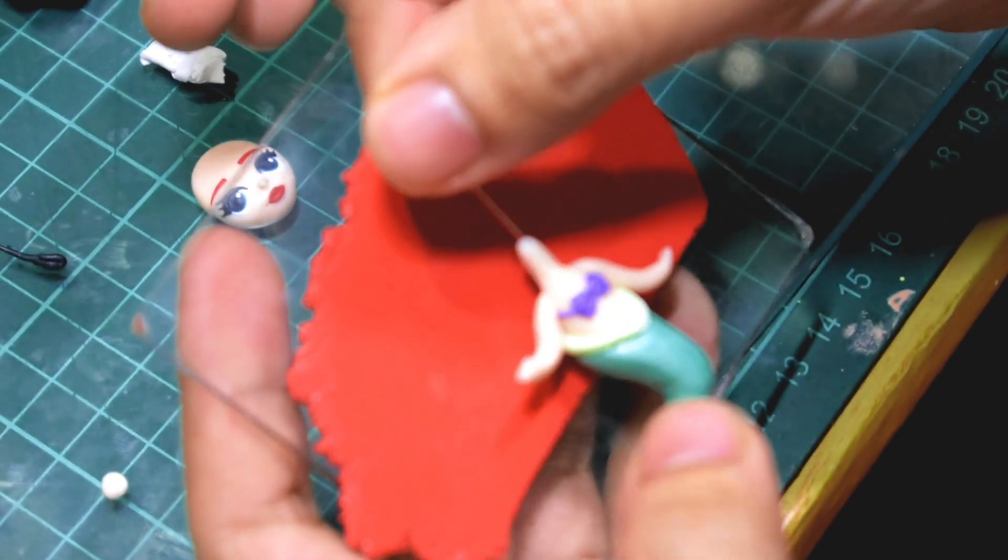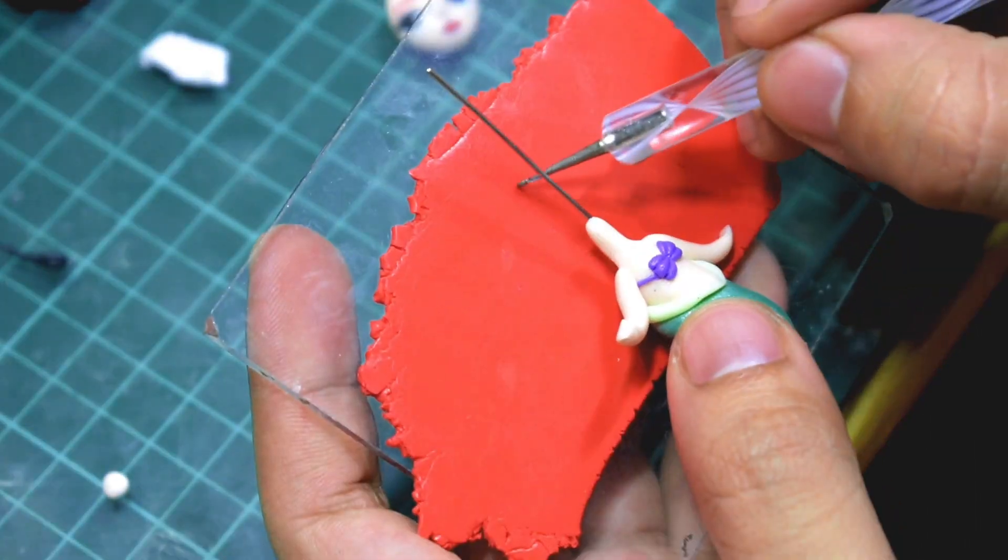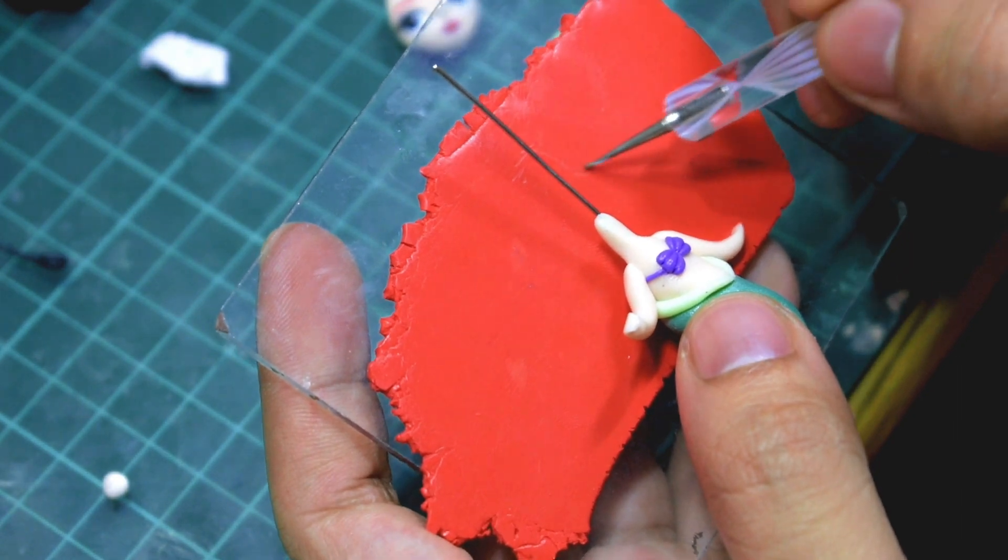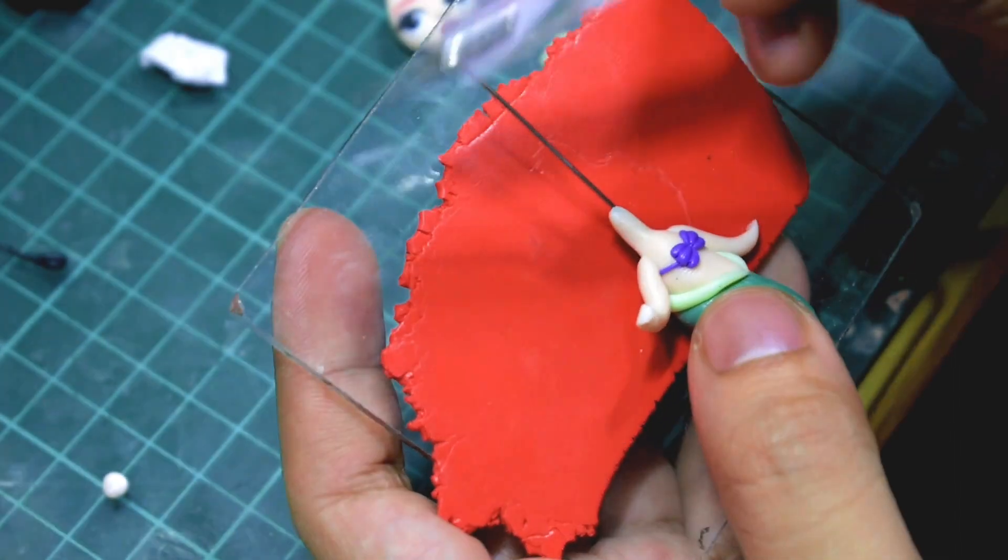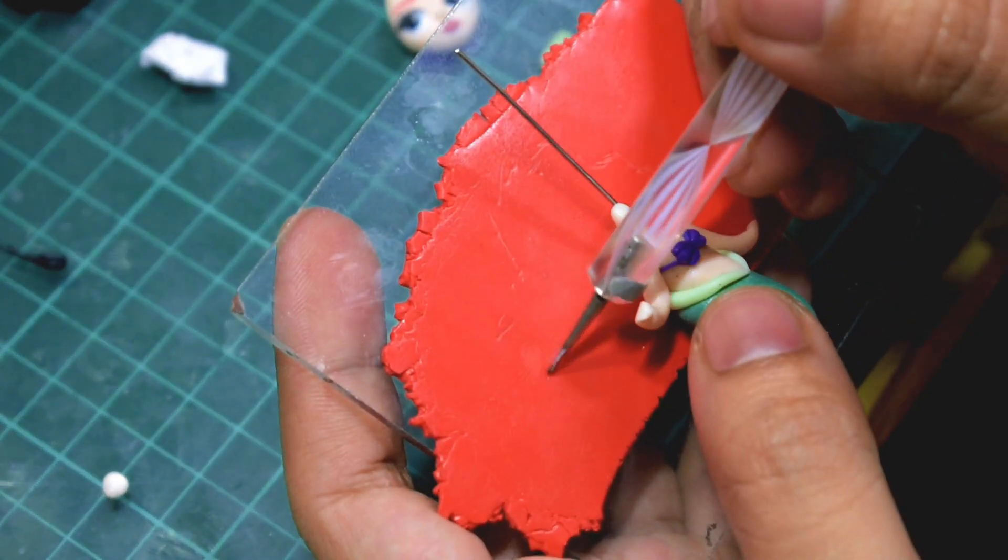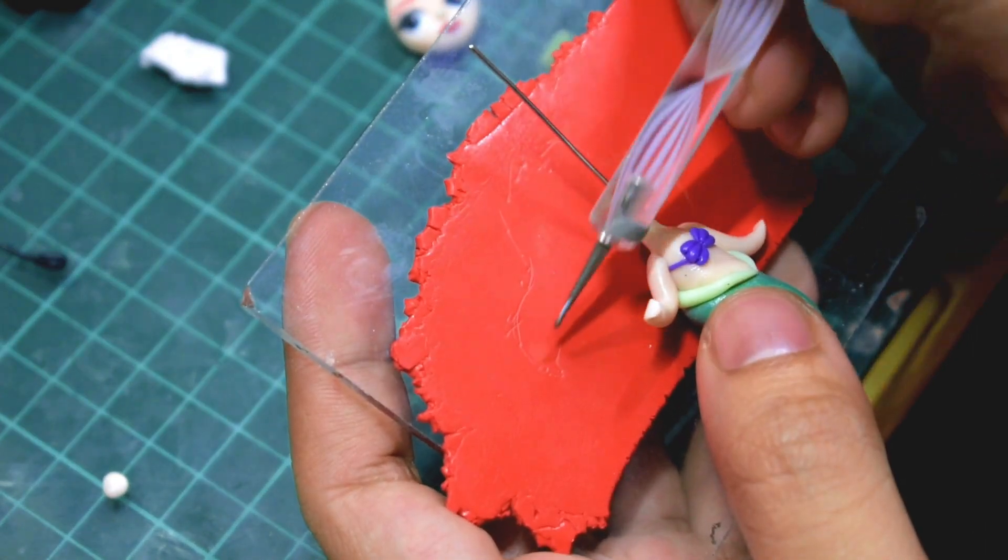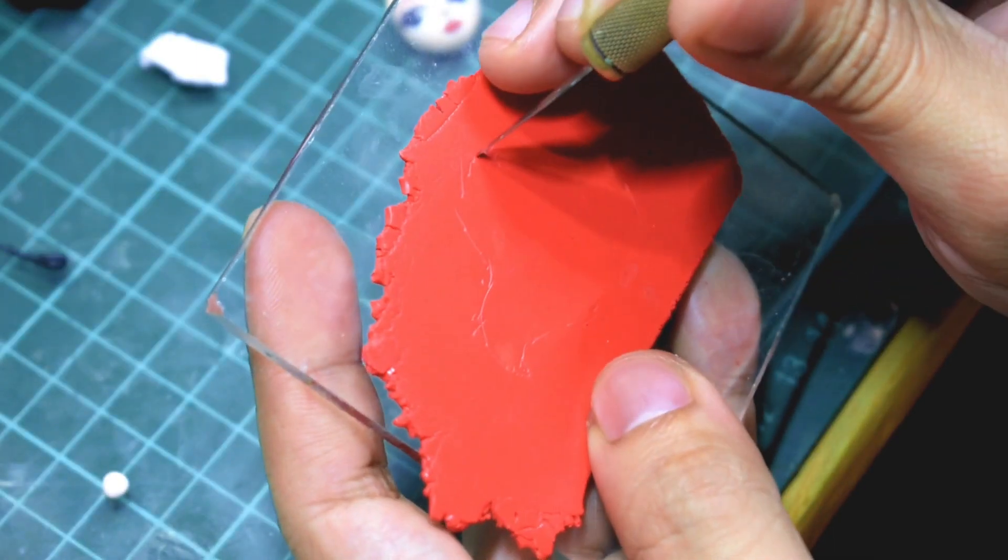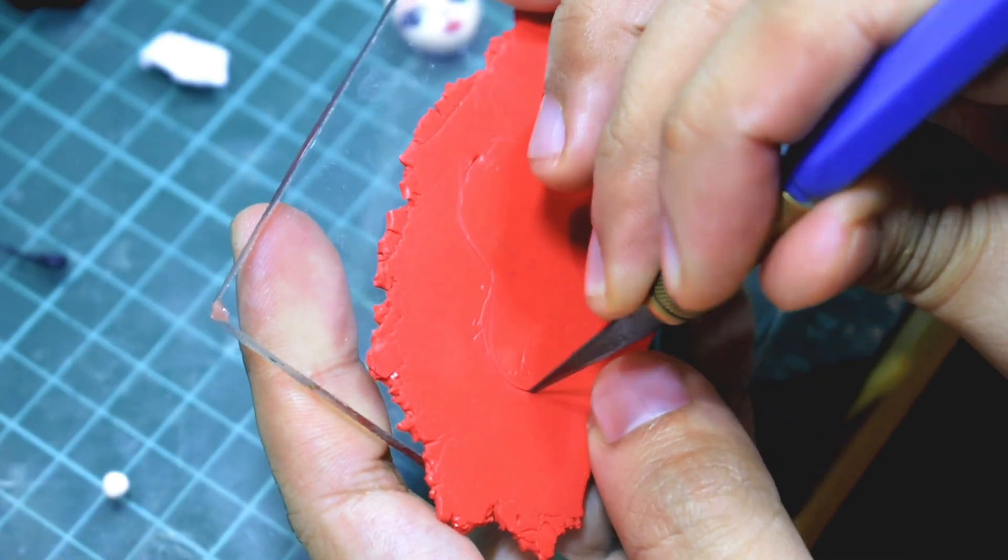And the finale of this project is the hair. So here I am just sketching the shape of the hair. Just use an exacto knife to cut this.